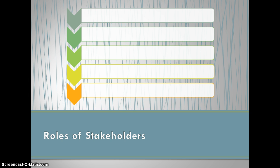Stakeholders have several specific roles in the adaptive management process. First, stakeholders are responsible for problem bounding, which includes defining, clarifying, and illuminating the problem at hand. All decision problems occur in a context of real-world complexities. Stakeholders help you find the right compromise between acknowledging the real world and keeping the problem tractable.